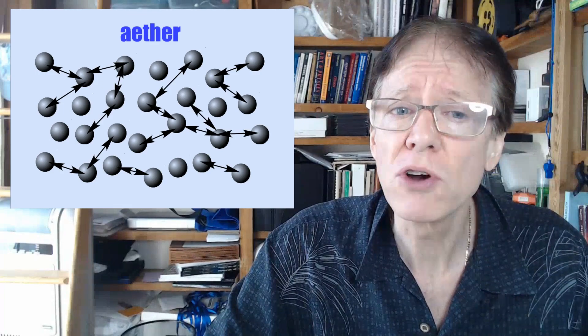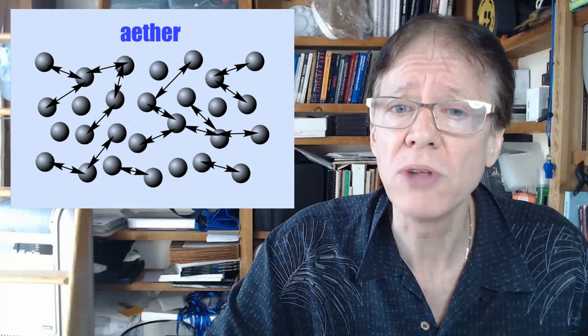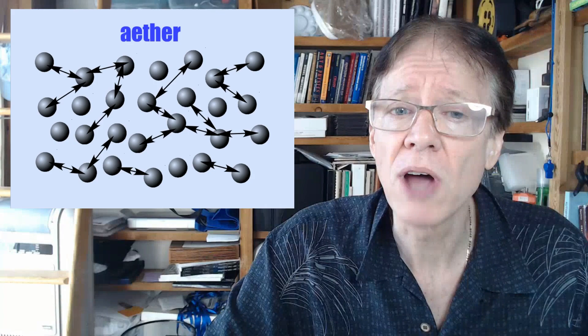But no etherist ever calls their ether particles photons because they know that the photon as described by mainstream science is not an ether particle. This is because mainstream science abandoned ether during Einstein's reign of non-physical terror upon big science. Big science abandoned the concept of ether and moved headlong into the world of light as a photon and a wave, somehow at the same time.